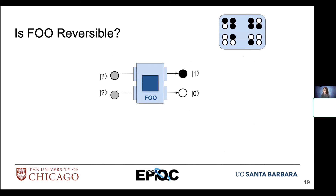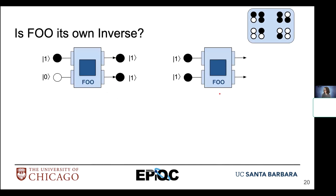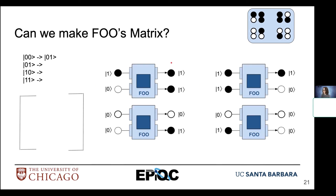Let's investigate a little bit further to see if function foo is truly reversible. Given an output, can we regenerate that input? Our output one, zero — if we send that back into foo, we get one, one. And then if we send one, one back through foo, we get one, zero. So here we can confirm that foo is its own inverse and it is reversible. Let's go ahead and make the matrix for foo.